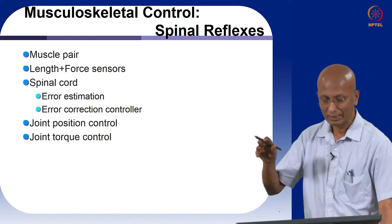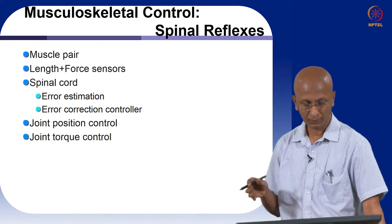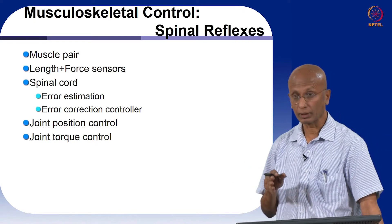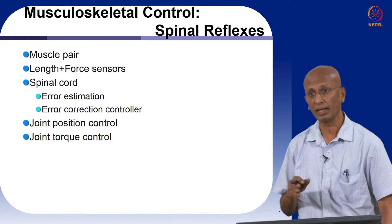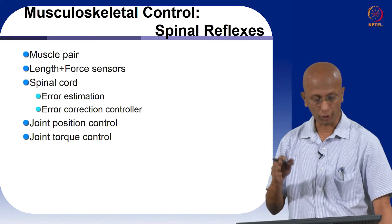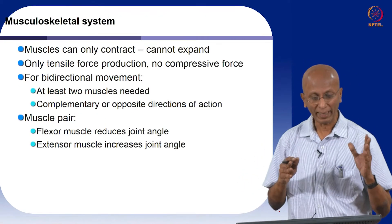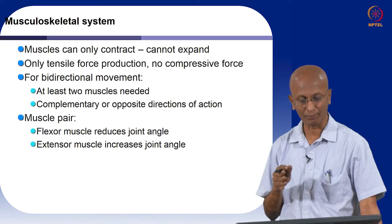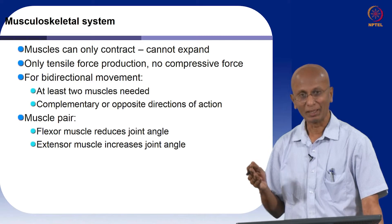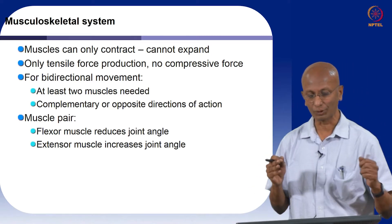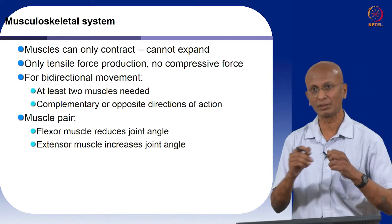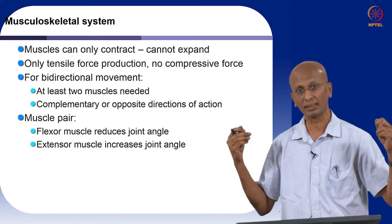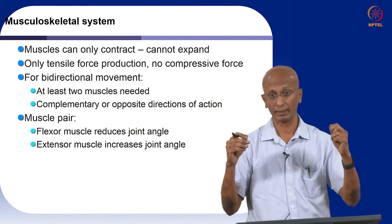The alpha motor neuron is the error correction controller, and by means of this feedback control system we can control both joint position and joint torque. At the background of the need for two muscles to control a joint is the fact that muscles can only contract — muscles cannot expand. That means muscles can only produce tensile force and they cannot produce compressive force. If you pull a muscle it can present a resistance depending on the activity of the muscle, but if you compress a muscle whether it is active or not it will simply collapse.